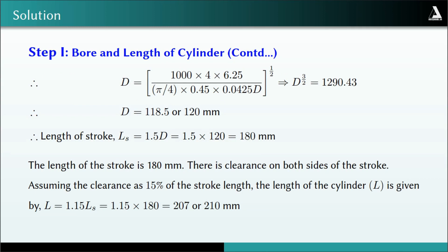Substituting the values and rearranging, we get D^(3/2) = 1290.43, from which D is found to be 118.5 mm, rounded up to 120 mm. The length of stroke is then Ls = 1.5 × D = 180 mm.